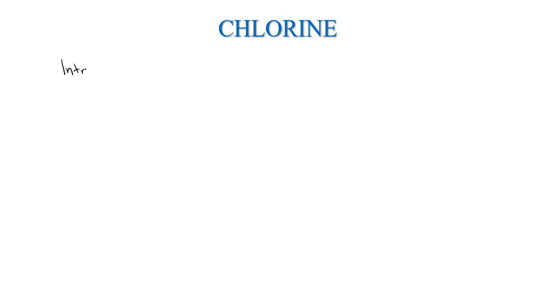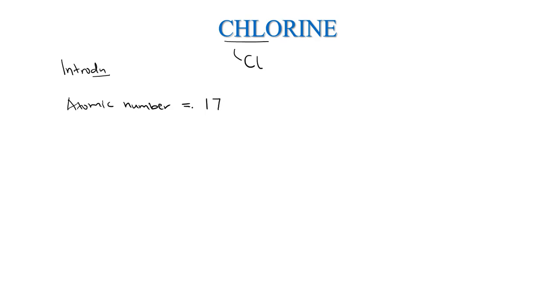Hello and welcome. Today we are going to look at the introduction of chlorine. Chlorine has a chemical symbol of Cl — capital C and small l — this is how we represent an element of chlorine in chemistry. It has an atomic number of 17. Atomic number basically means the number of protons in the nucleus of this chlorine atom.